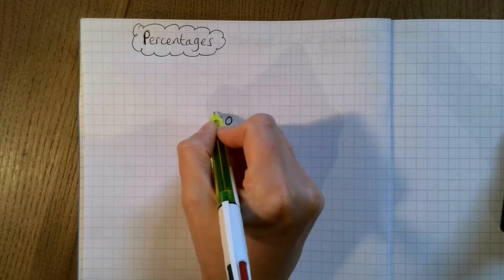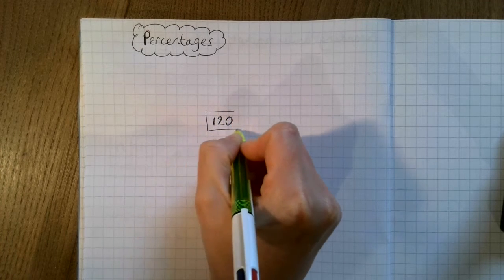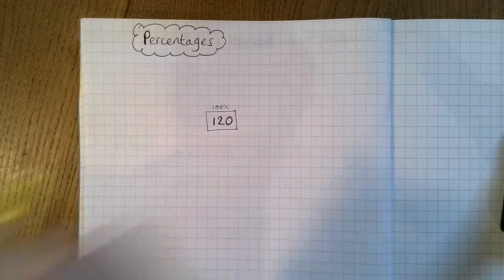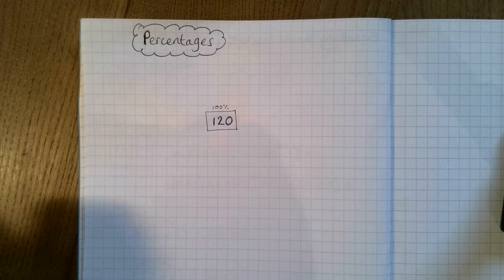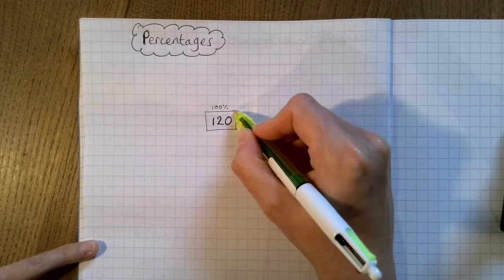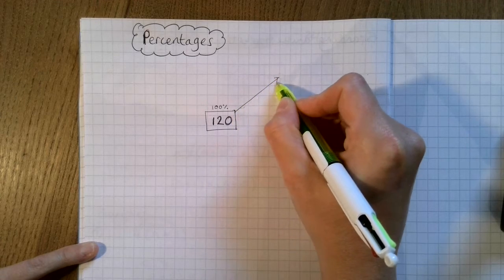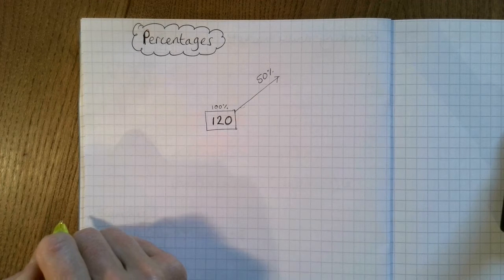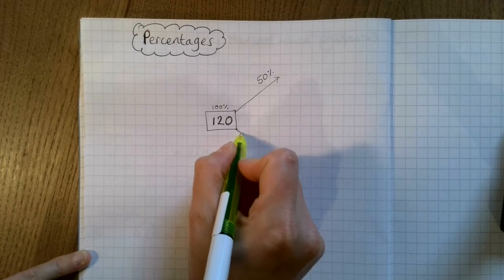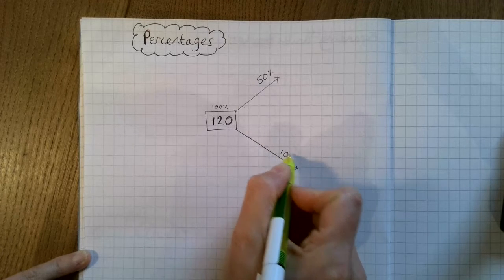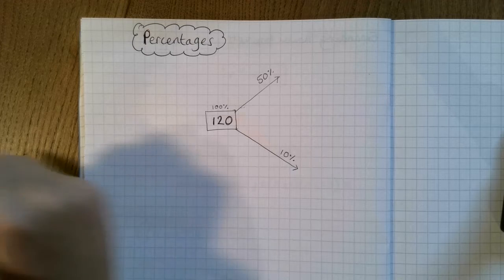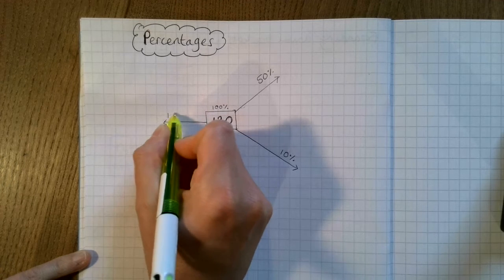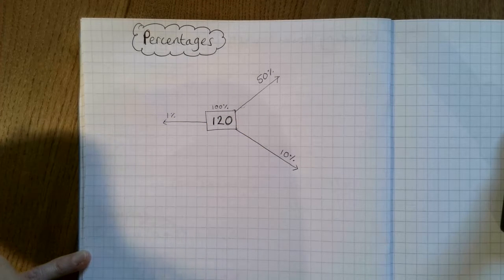So we're going to start with the number 120. That's going to be our 100%, the whole number. And we're going to talk about how we could find 50%, 10%, and 1%. See if you can remember how to do that.